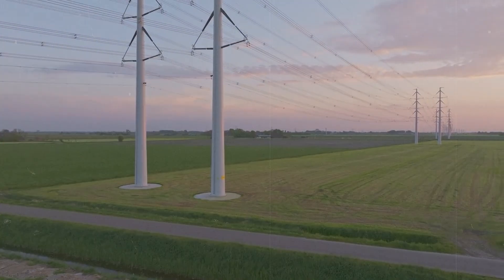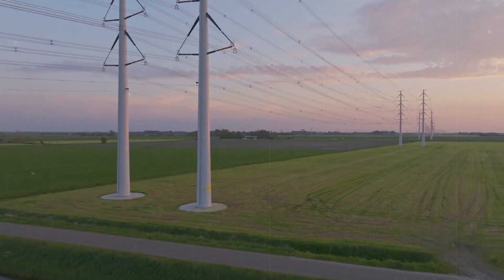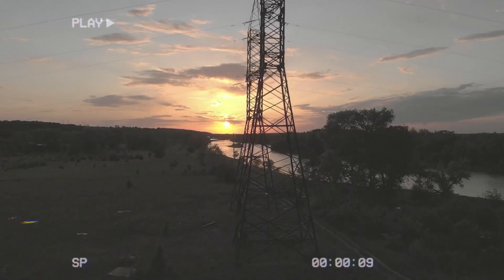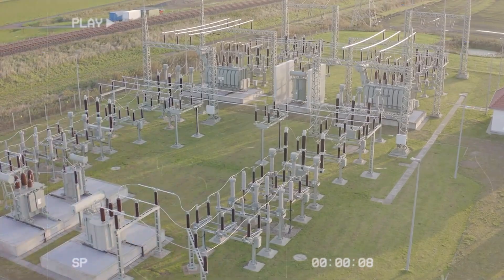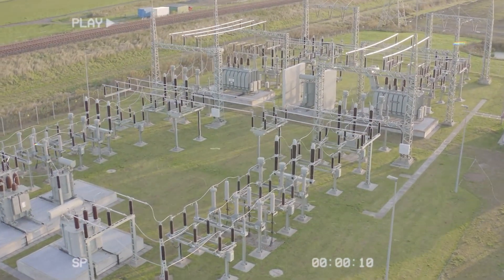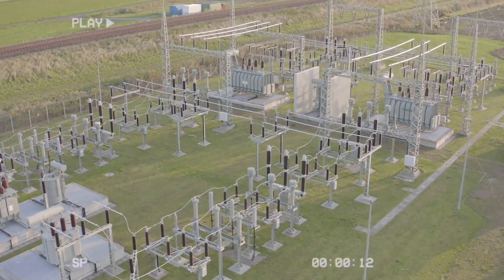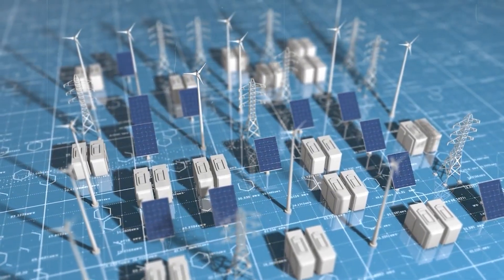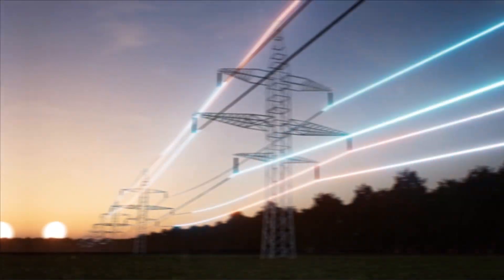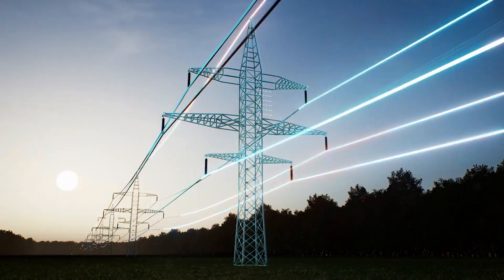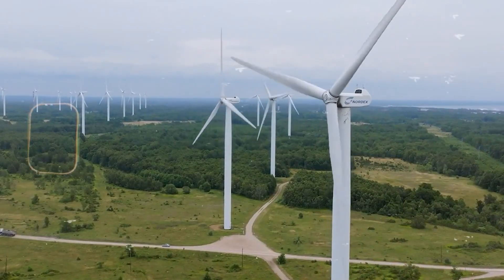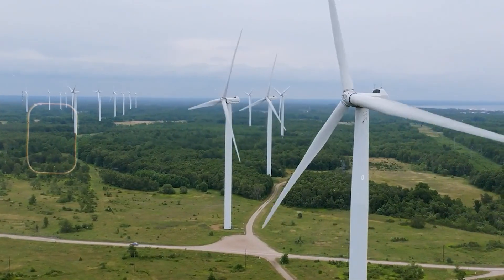The evolution of grid-forming inverters is one potential solution. Unlike traditional grid-following inverters, grid-forming inverters are capable of starting up a grid from scratch, even in the absence of a functioning grid. This could provide greater resilience in the face of power outages and allow renewable energy systems to operate more independently.